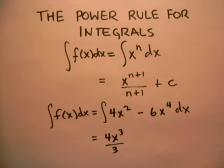Then we do the same thing here. We would take our six x, raise the power on x by one so we'll get x to the fifth, and divide by that same number.